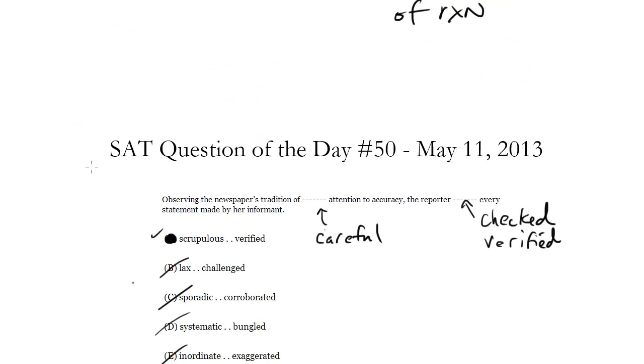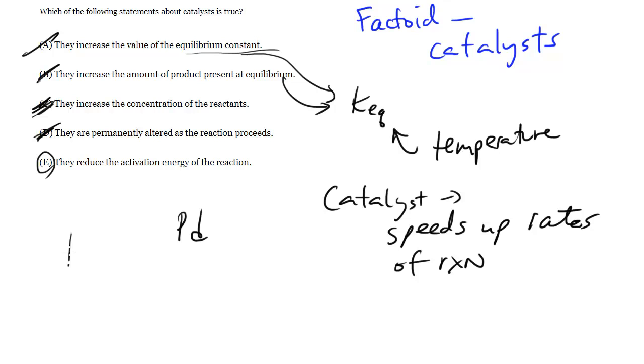So if you remember this activation chart, let's say for an exothermic reaction like this, this is the energy of the reactants, this is the energy of the products. So now it's an exothermic reaction because we have this change in energy from start to finish. But to get there, we have to go over this hump. And this hump is your activation energy, your Ea.